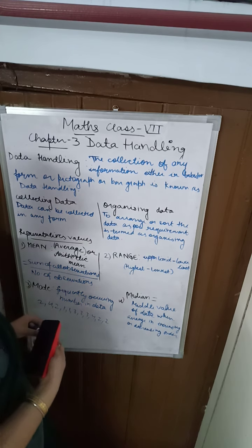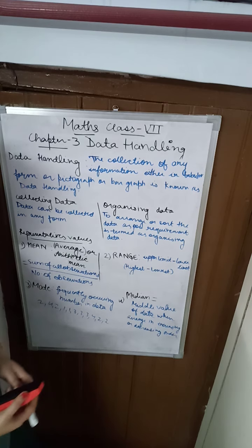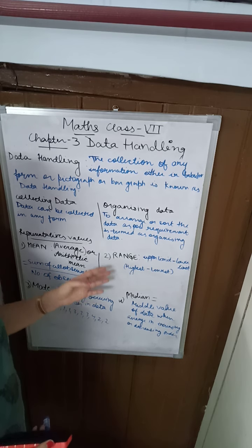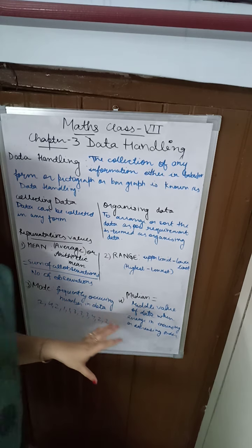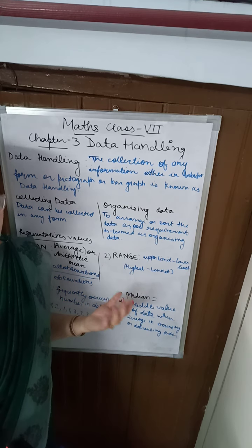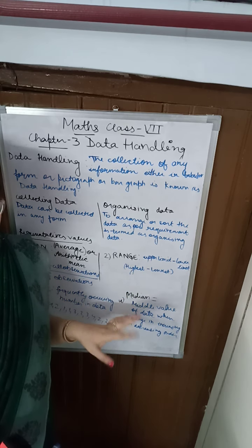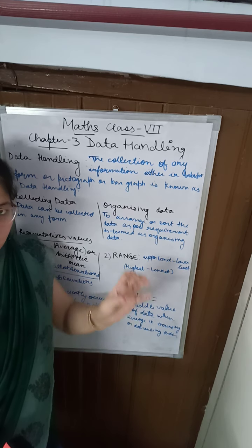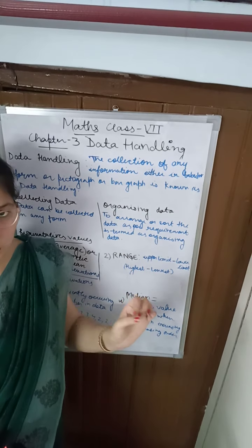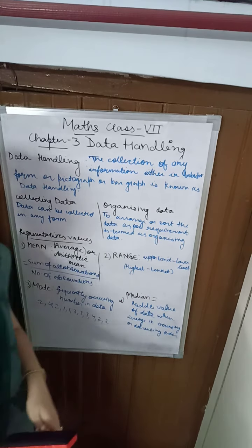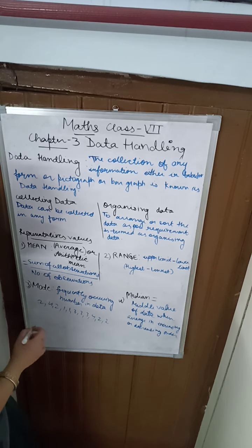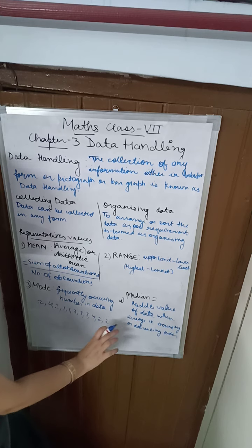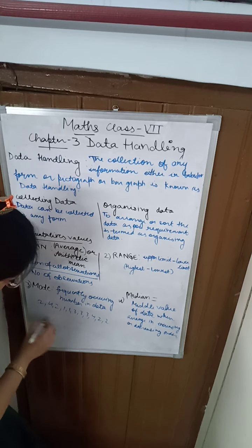Next is median. Median means the middle value of the data when you arrange it in increasing or decreasing order — either ascending or descending. After arranging the data that you have collected, whatever middle value you find is the median. For the same data, you first sort it in increasing order.